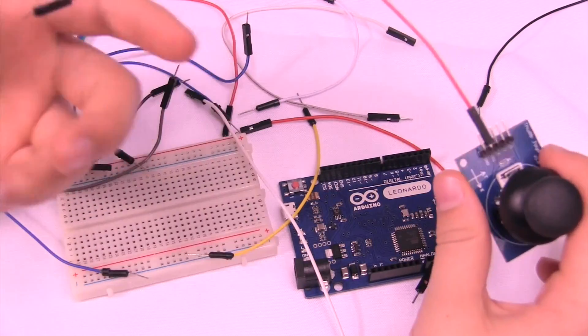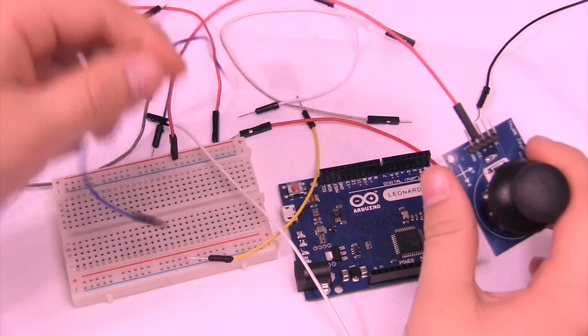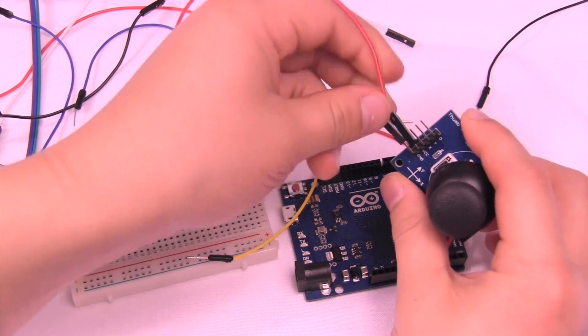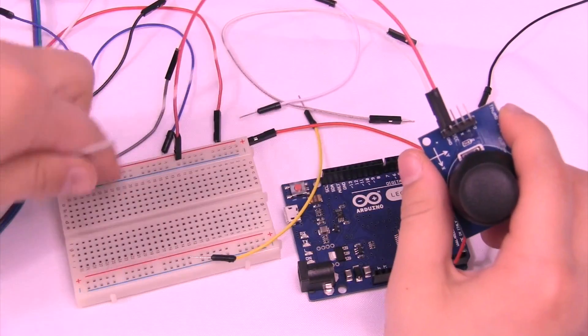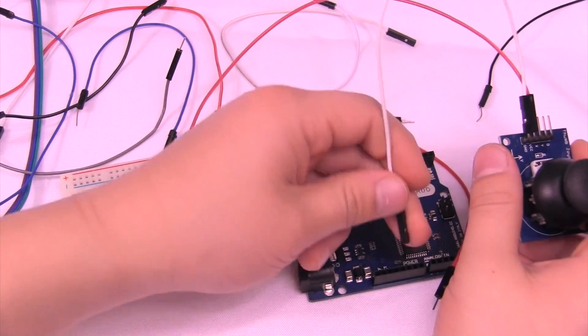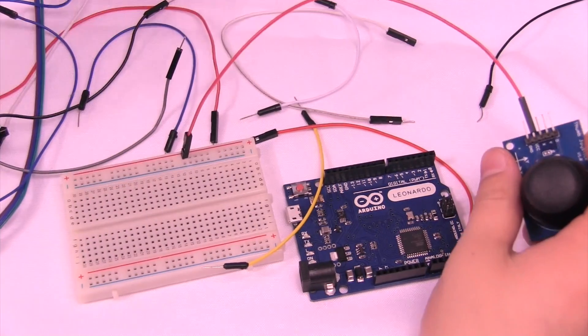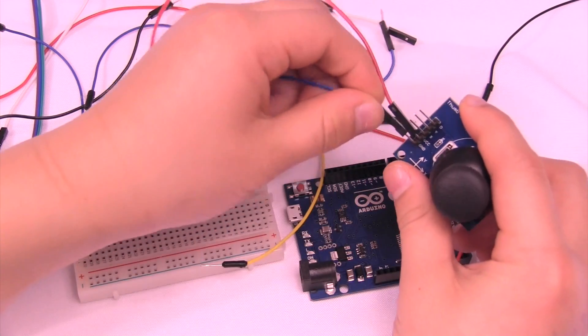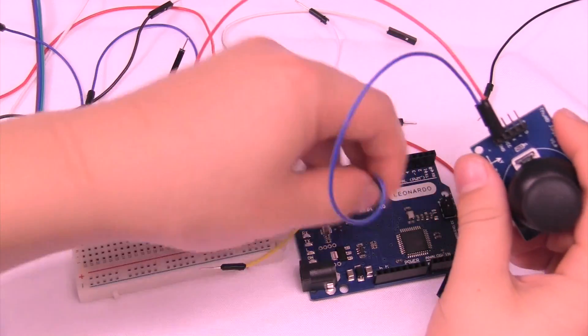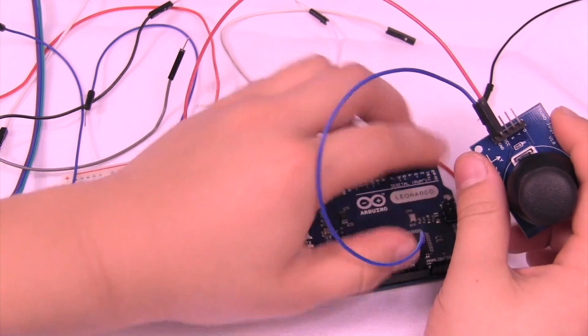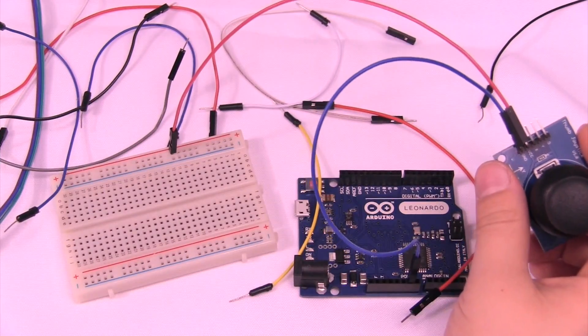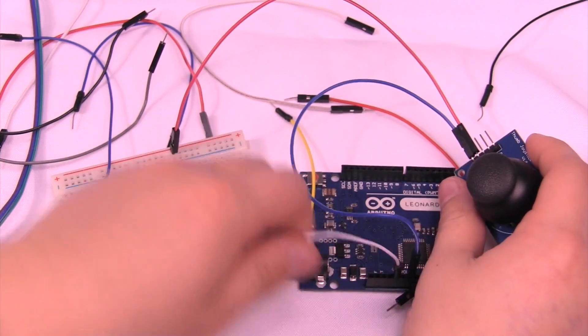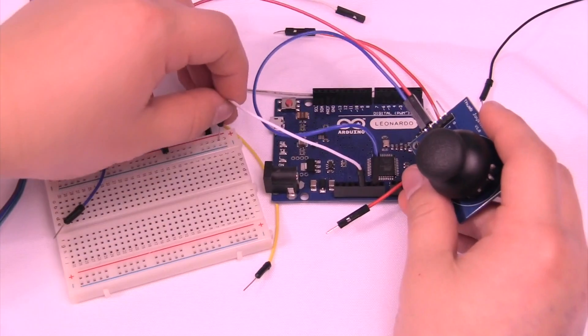Then take another one of those wires and plug in ground to the negative terminal, or you can just connect it directly to ground if you want to. Then we're gonna take a regular wire and connect VCC to the positive terminal, or five volts to the positive terminal of the breadboard.